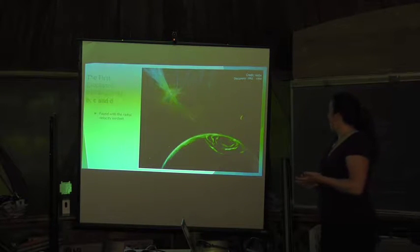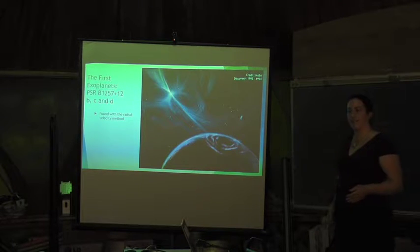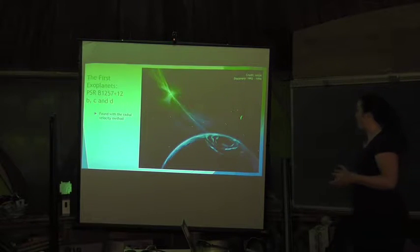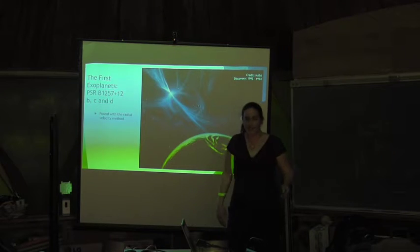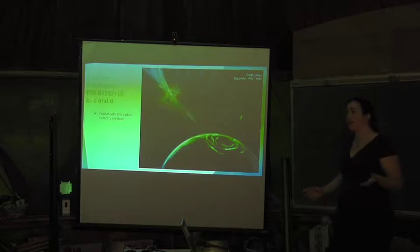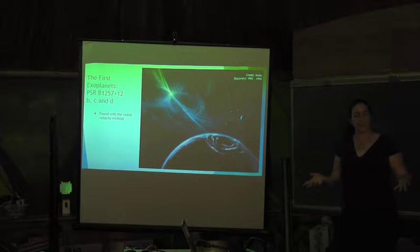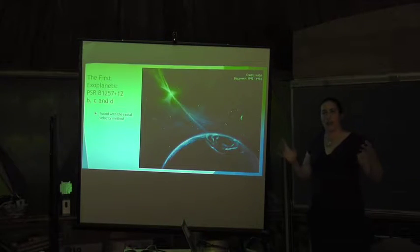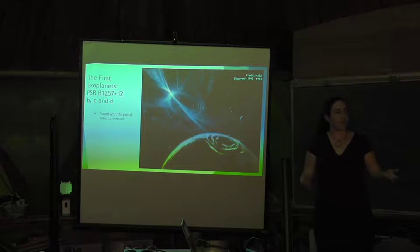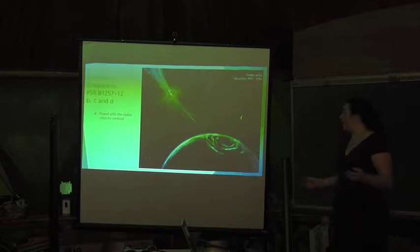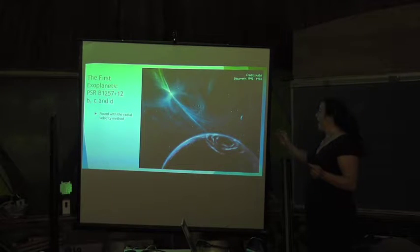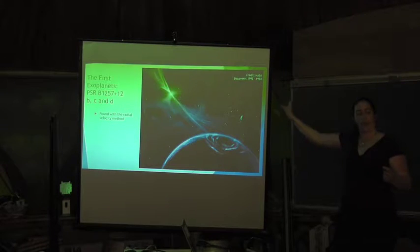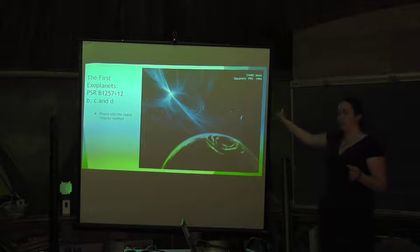The first exoplanets were found in 1992, although another one was found in the same system in 1994, and they are weird. This is the first time a planet was found around another star — but this star was a pulsar, a dead star. A neutron star is one way a massive star can end its life: it is small and very dense. A neutron star is typically about the size of Manhattan but has all the mass of a star. A pulsar has a strong magnetic field and jets shooting out of its axes — those jets act like clocks.